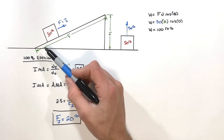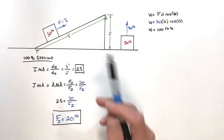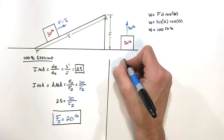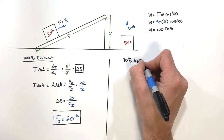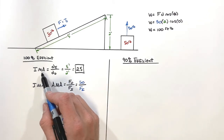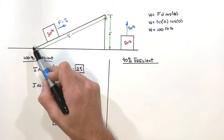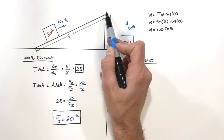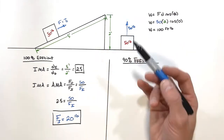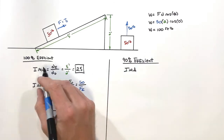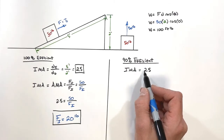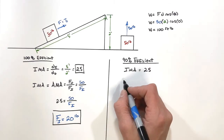Now let's make this more realistic by adding some friction — the ramp is only 90% efficient. One thing that does not change is the IMA, because IMA is based on displacements. Regardless of friction, the block still moves five feet along the ramp and gains two feet of vertical height, so the IMA remains 2.5.